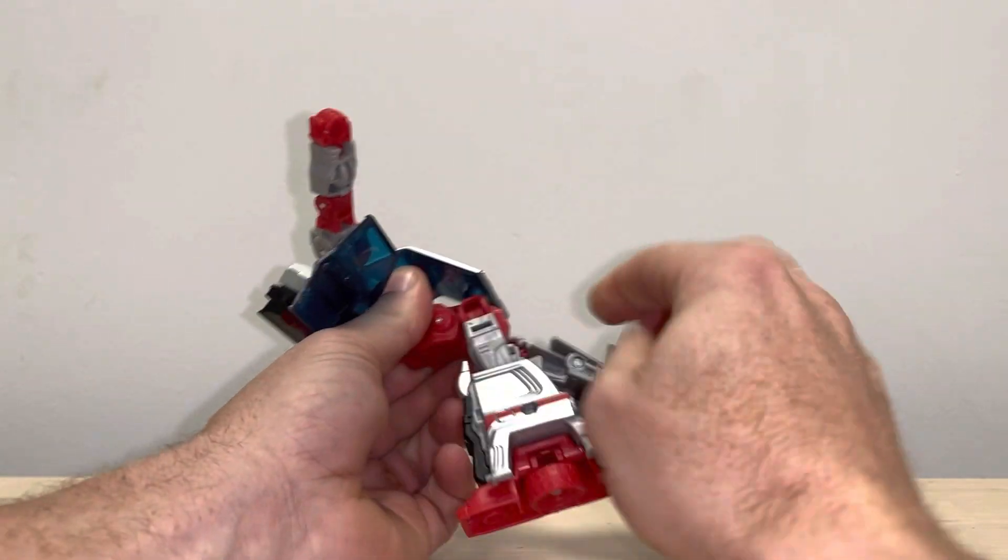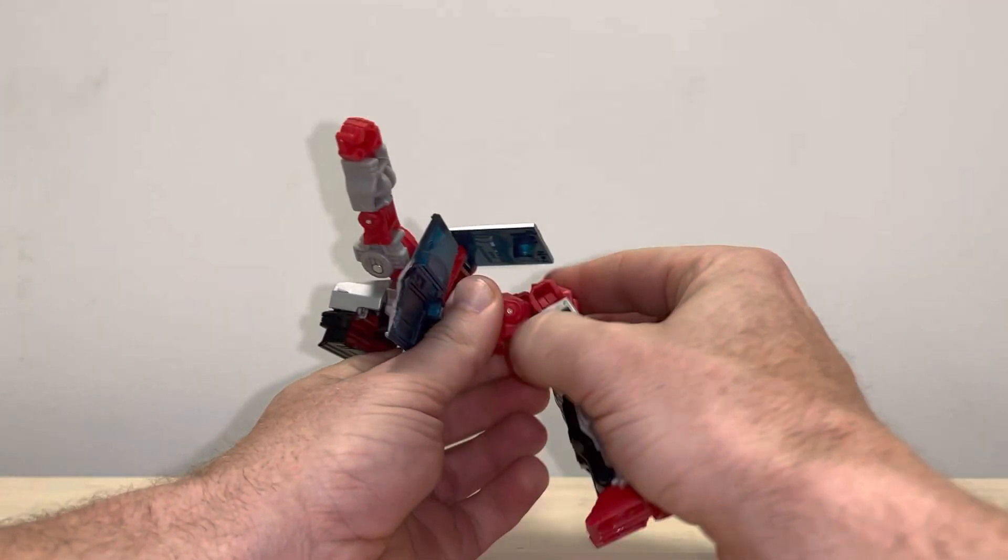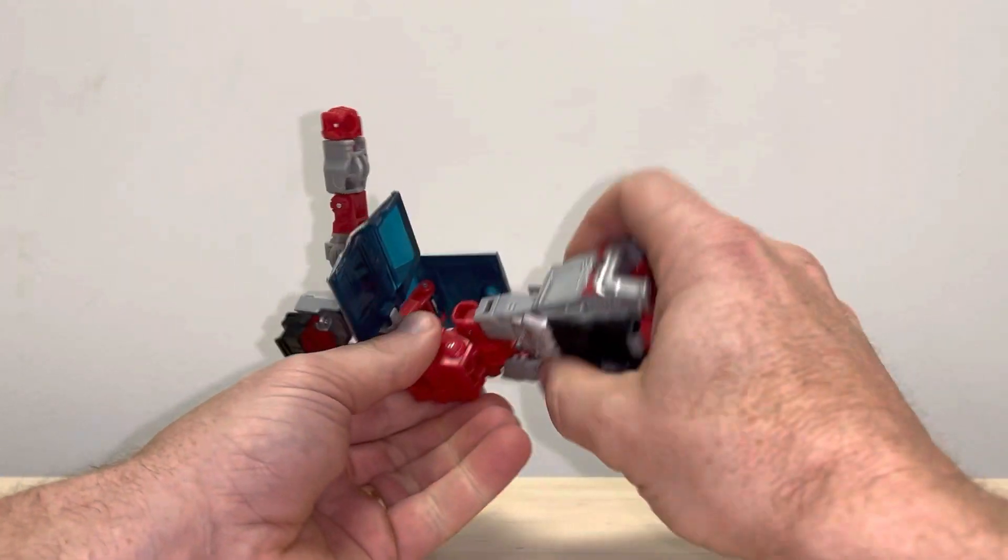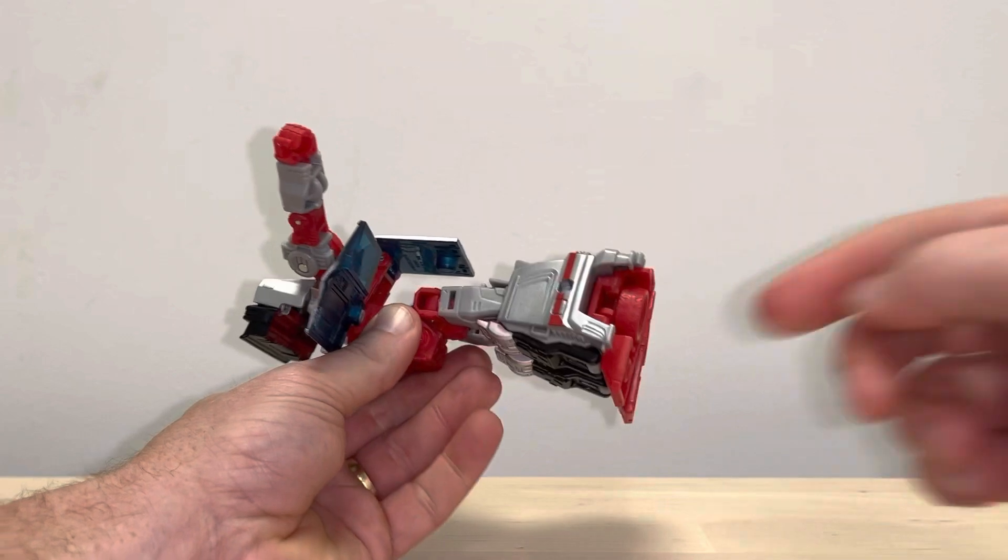So what I mean by that is bring the legs down. Sorry, I said underneath, I meant over. So the waist is going to come over the top like so, and then that's pretty much ready for when we want to clip everything in.